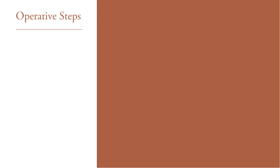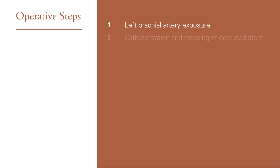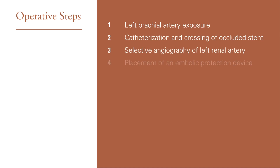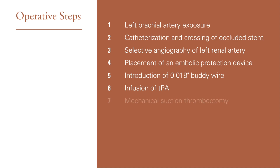Next, we'll break down the procedure into 10 steps as follows: open exposure of the left brachial artery, catheterization and crossing of the occluded stent, selective angiography of the left renal artery, placement of an embolic protection device, introduction of an O18 buddy wire, infusion of TPA, mechanical suction thrombectomy, deployment of the new stent graft, repeat angiography, and closure.